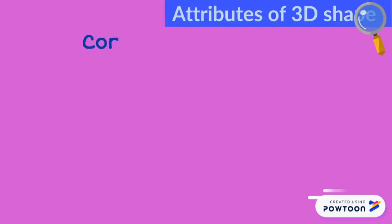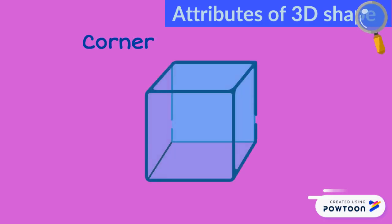We also have corner. Corner is where two or more edges meet. A corner can also be called a vertex.